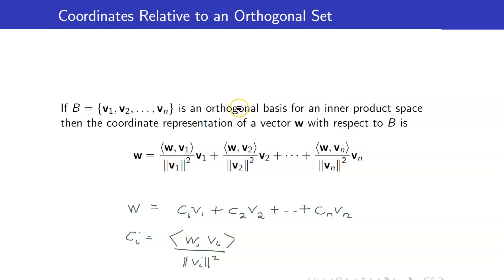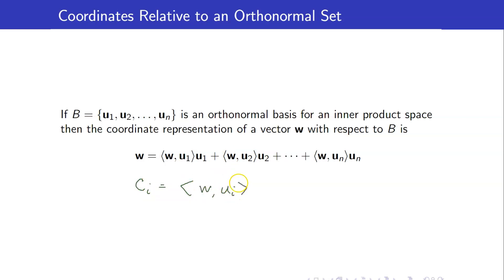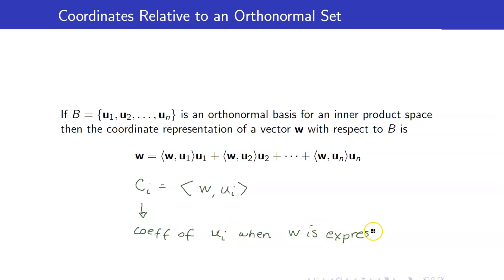If we have an orthonormal basis, the length of each vector is 1, so the coefficients simplify further. W equals the inner product of W with U1 times U1, plus the inner product of W with U2 times U2, and so on. In other words, the coefficient Ci is simply the inner product of W with Ui, where Ci is the coordinate of Ui when W is expressed as a linear combination.